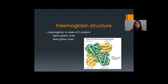Let's talk about the hemoglobin structure. Hemoglobin is composed of a heme group and globular chains. It is made up of two proteins: the alpha-globin chain and the beta-globin chain. In this picture, the alpha-globin chains are indicated in green and the beta-globin chains in yellow. The hemoglobin molecule is made out of two alpha-globin chains and two beta-globin chains along with heme groups.